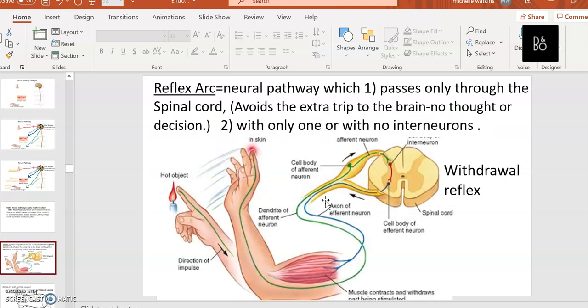Most neural pathways involve quite a few interneurons. This is a very special and very simple motor pathway called a reflex arc. A reflex arc is simply a neural pathway which does two things to speed up that neural message: it passes only through the spinal cord, it avoids the extra trip to the brain so that it saves time. That's why there's no thought or decision in your reflexes. It would take too long if you said 'oh I'm being burned' and you decided to lift your finger - instead it happens reflexively before you decide.